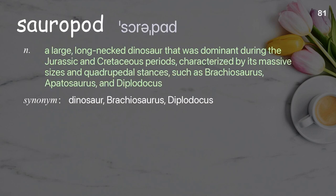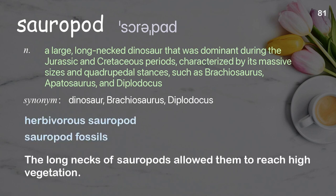Sauropod: a large, long-necked dinosaur that was dominant during the Jurassic and Cretaceous periods, characterized by its massive size and quadrupedal stance, such as Brachiosaurus, Apatosaurus, and Diplodocus. Examples: herbivorous sauropod, sauropod fossils. The long necks of sauropods allowed them to reach high vegetation.